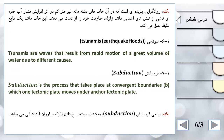سونامی: با توجه به اینکه صفحات زمین از پایین به هم ضربه می‌زنند، یک ارتفاع گاهی تا صد متر موج به صورت خیلی فزاینده به سمت ساحل نزدیک می‌شود. وقتی به ساحل برسد، یک نیروی خیلی عظیم به تمام تأسیساتی که نزدیک ساحل است وارد می‌کند. Tsunamis are waves that result from rapid motion of a great volume of water due to different causes. سونامی موج‌هایی هستند که نتیجه حرکت سریع حجم بسیار زیادی از آب به علت دلایل مختلف هستند.